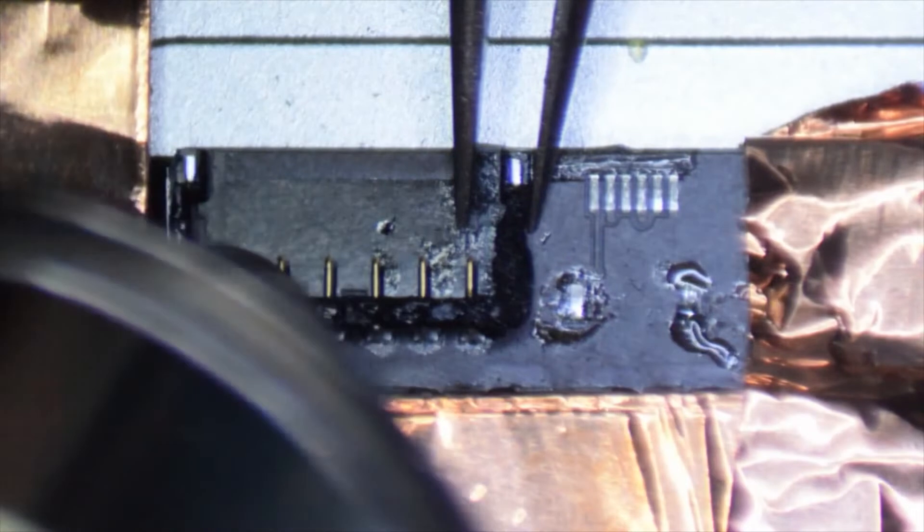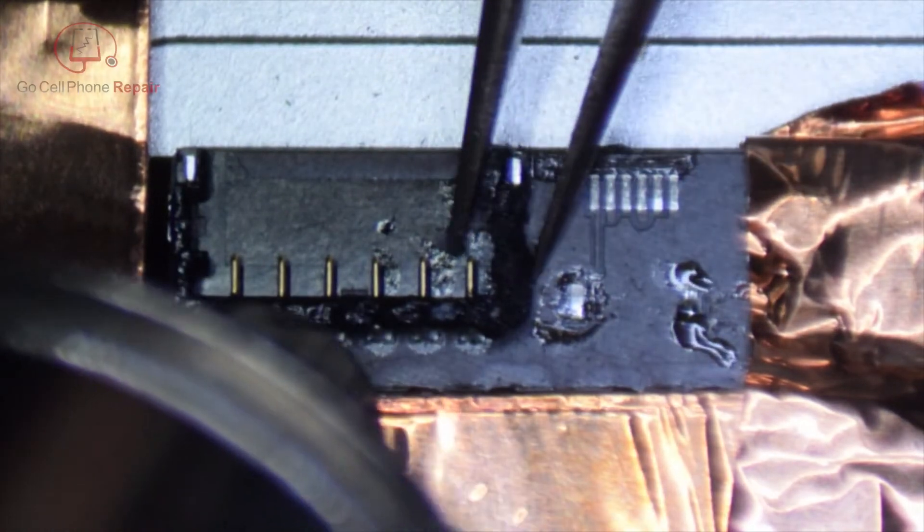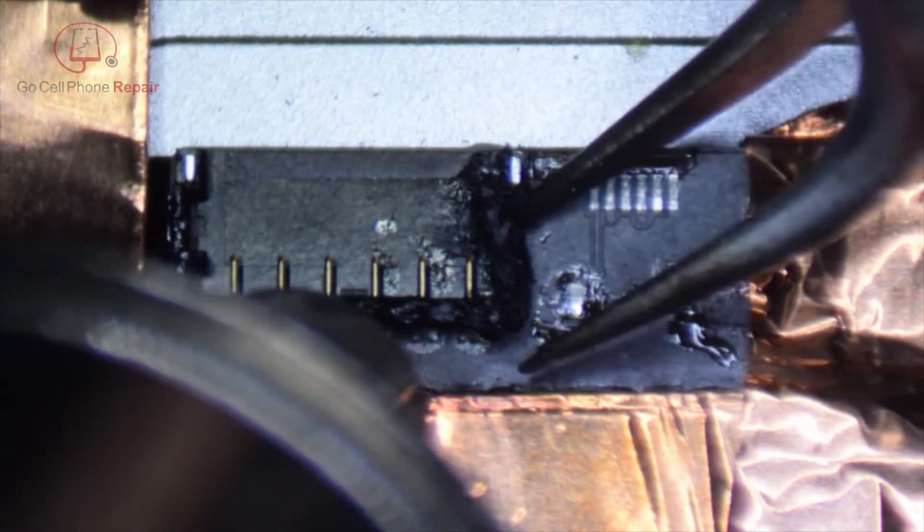So as we heat this area up, and you can see I've got it taped off with metallic foil, and that will prevent some of the hot air from blasting the other components in that area. So we should be able to get this up to temperature without causing any collateral damage.